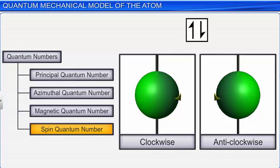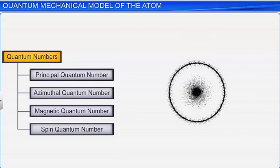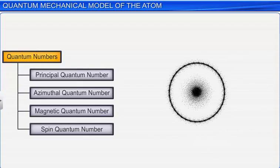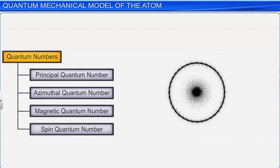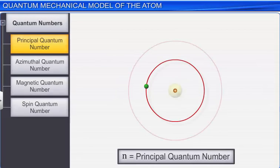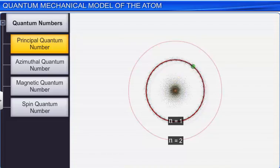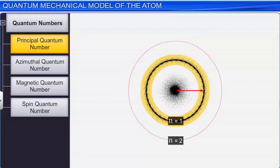Spin quantum number is characteristic for an electron. Therefore, quantum numbers can be defined as a set of four numbers that provide complete information about the electrons in an atom. The principal quantum number, denoted by the letter n, determines the size and, to a large extent, the energy of the orbital in which the electron resides. The size of an orbital increases with the increase in n. In other words, the larger the value of n, the greater is the distance of the electron from the nucleus.